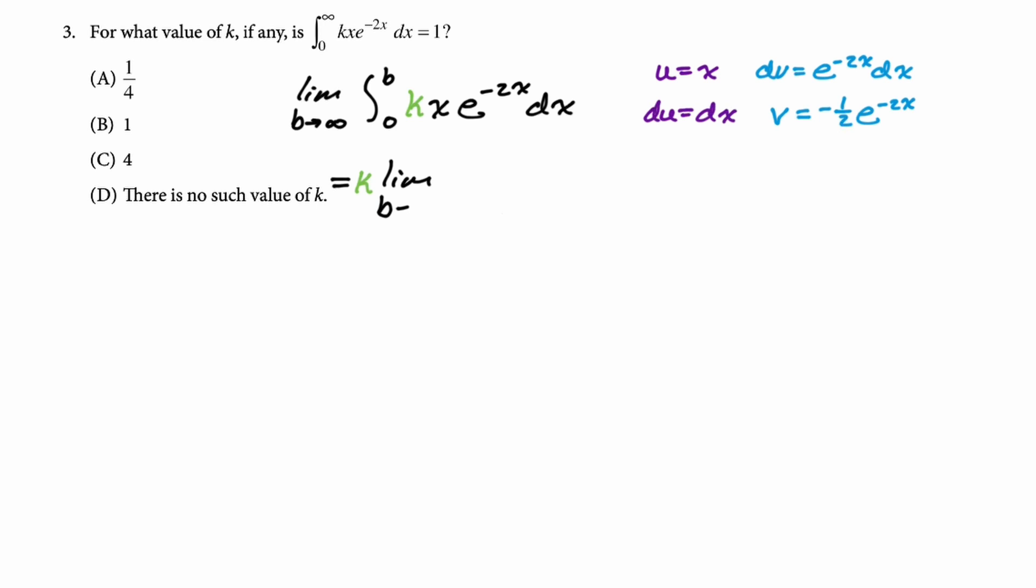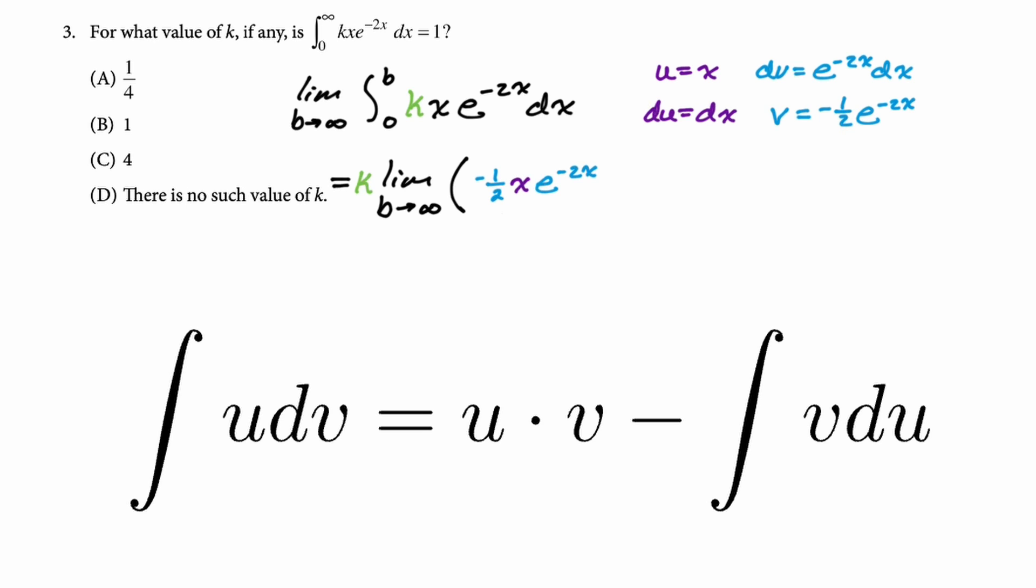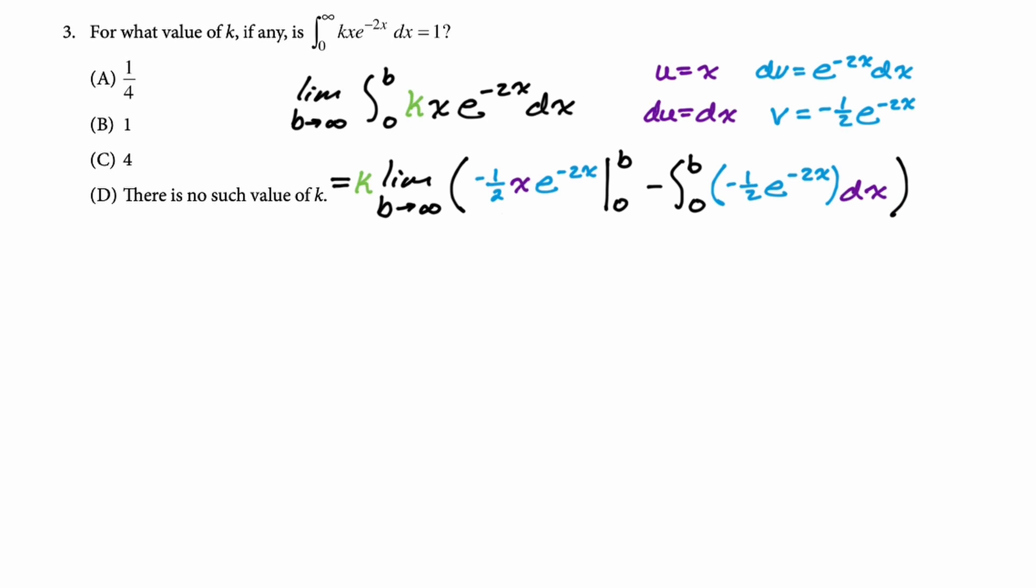So k times the limit as b approaches infinity of uv so that's going to be negative 1 half x e to the negative 2x minus, this is a definite integral so we're going from zero to b, minus the integral of v du so that's just negative 1 half e to the negative 2x and then dx. I'm going to finish the integral and then deal with the bounds. I'm not going to plug in yet so let's say we have k still the limit. I'm going to still leave this but I'm going to rewrite it a little bit and then the integral of negative so it's minus the integral negative 1 half and negative 2x.